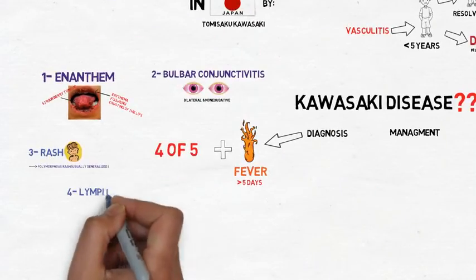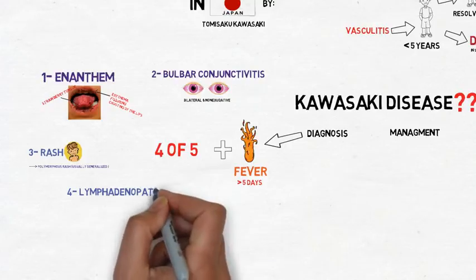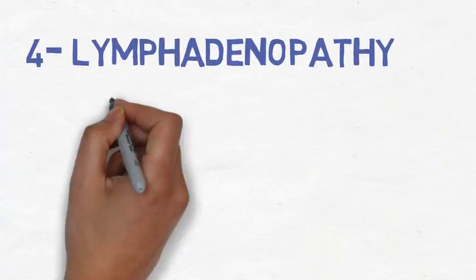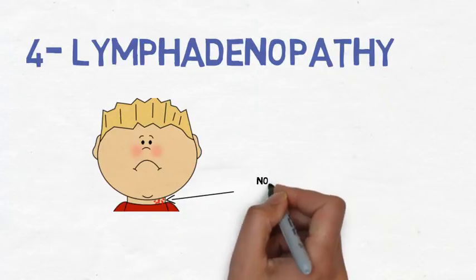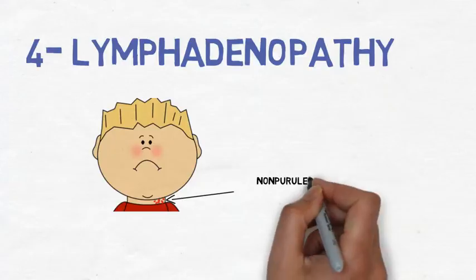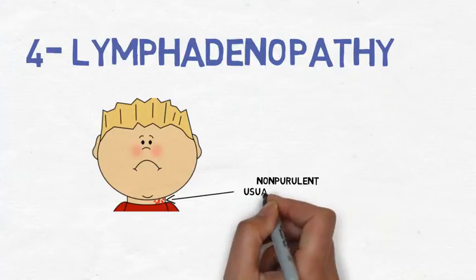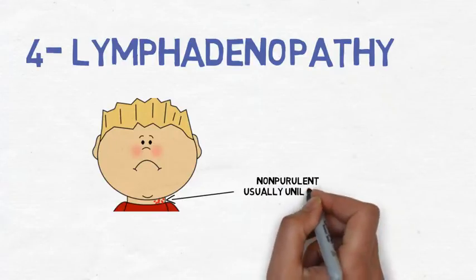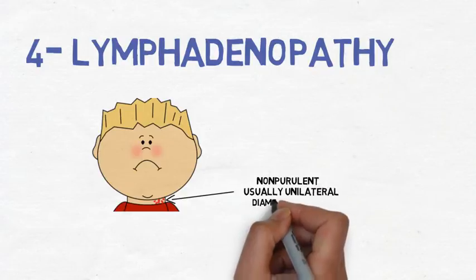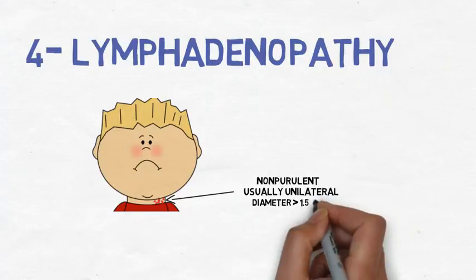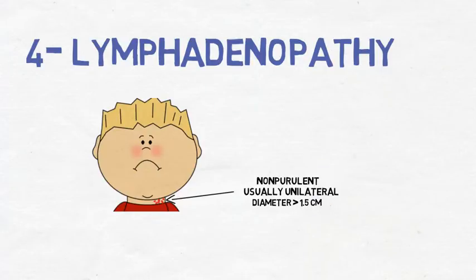Fourth is lymphadenopathy. In Kawasaki disease, the lymphadenopathy is mainly non-purulent and unilateral, and we need at least to have one lymph node measuring more than 1.5 cm in diameter.